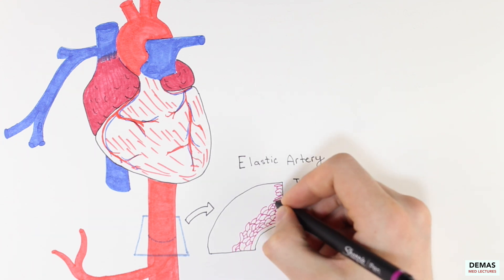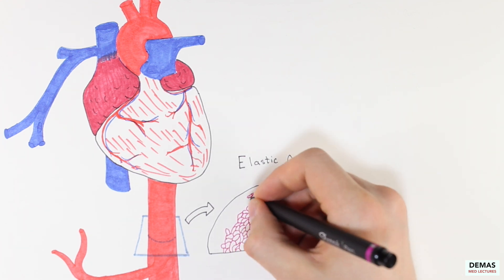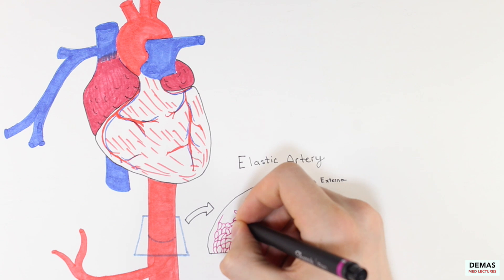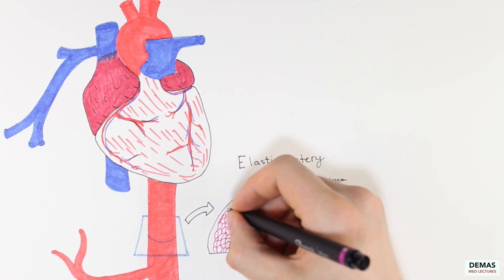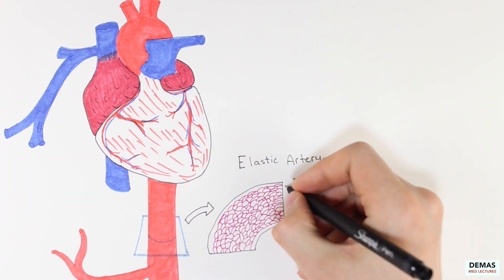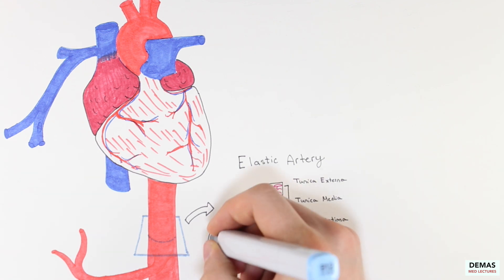A thick layer of tunica media is present, as seen here, and there is additionally a connective tissue layer of tunica externa present as well on the outside, as shown in blue.